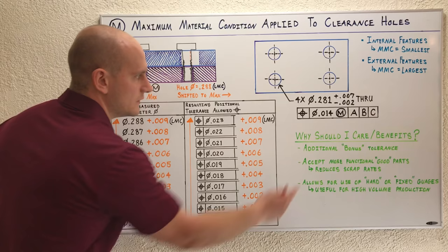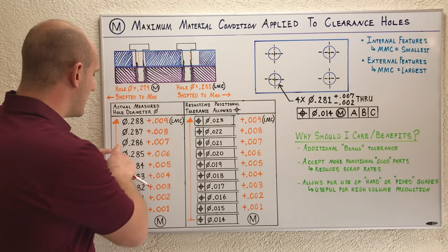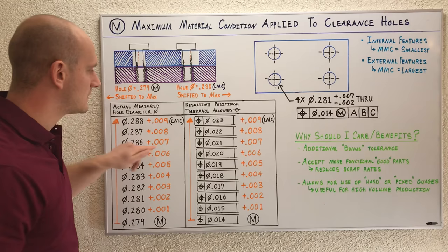But if you use MMC, if you invoke that, now what they can do is put that part back in their fixture, open that hole up a little more, and now all of a sudden they're good. You have an acceptable part. It falls within the size tolerance and now you've brought it back into positional tolerance.